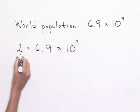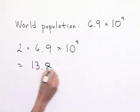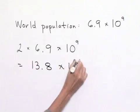So we're going to multiply 2 times 6.9 to give us 13.8. That's still going to be multiplied times 10 to the 9th power.